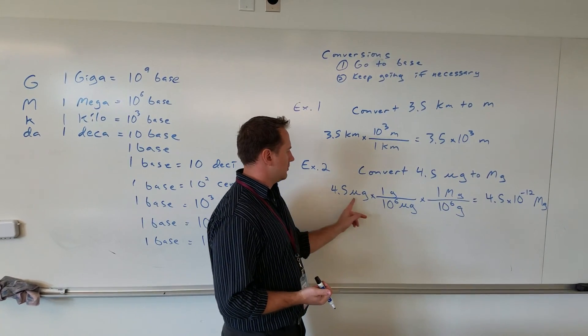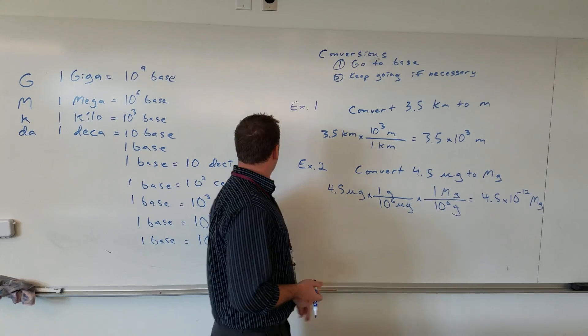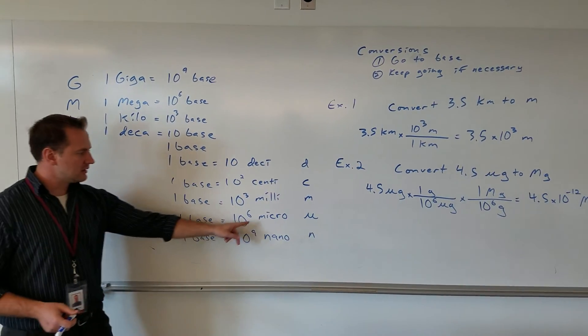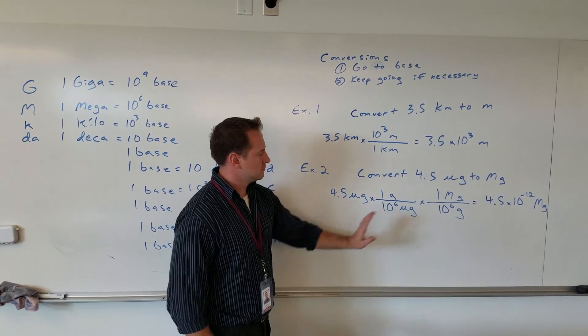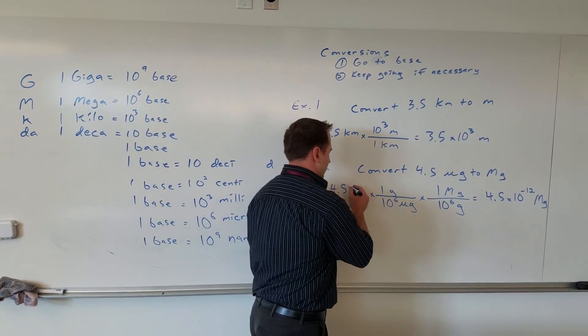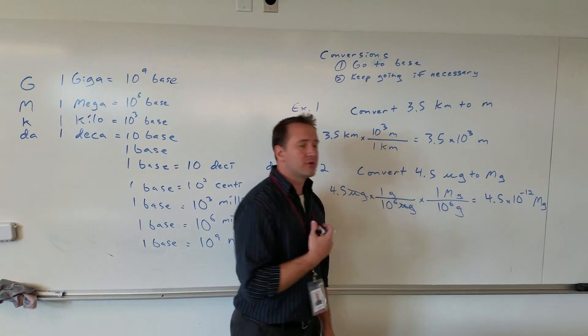What I first do is relate micrograms to grams. As we can see over here, there are a million micrograms in a gram. I set that up with the unit I'm trying to cancel out on the bottom, and it goes away. At this point, if I stopped, I would know how many grams I have.